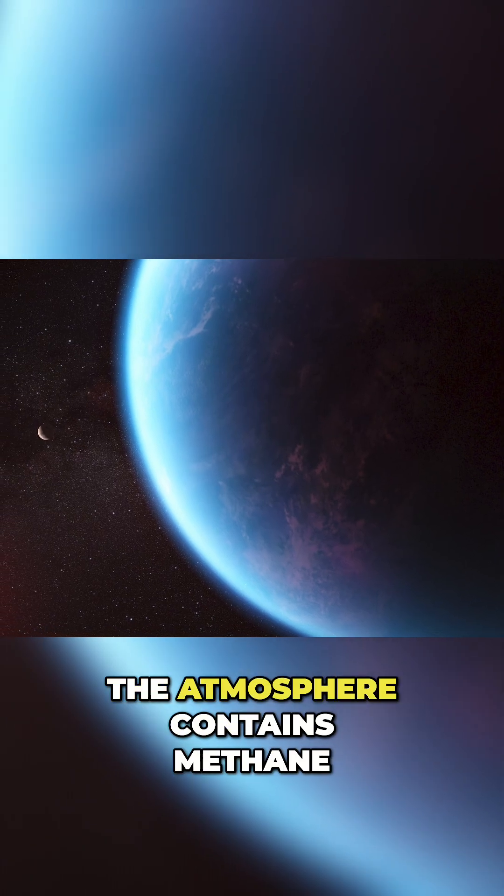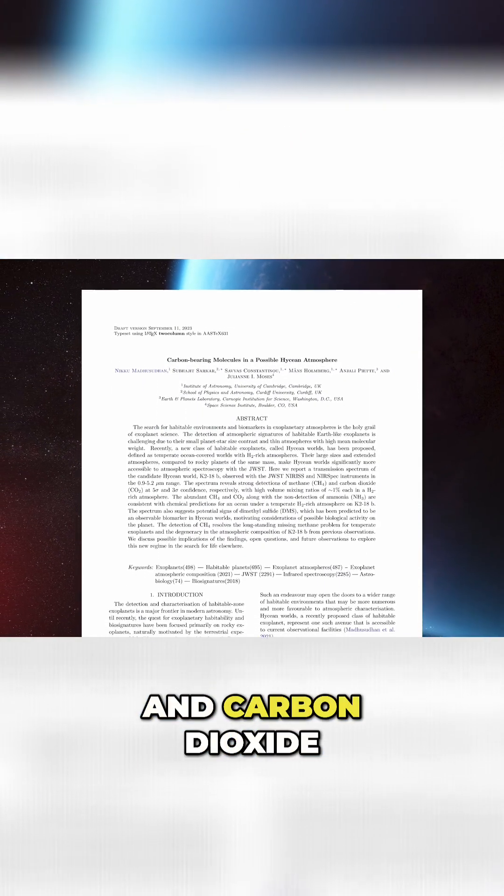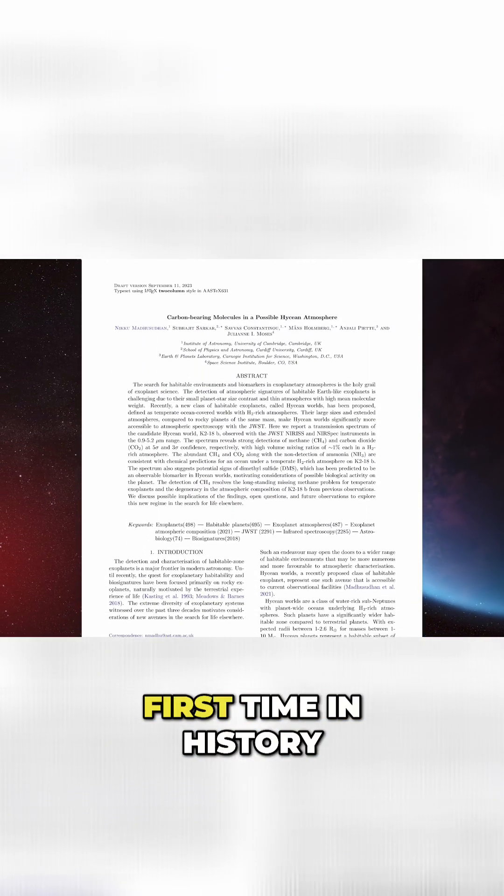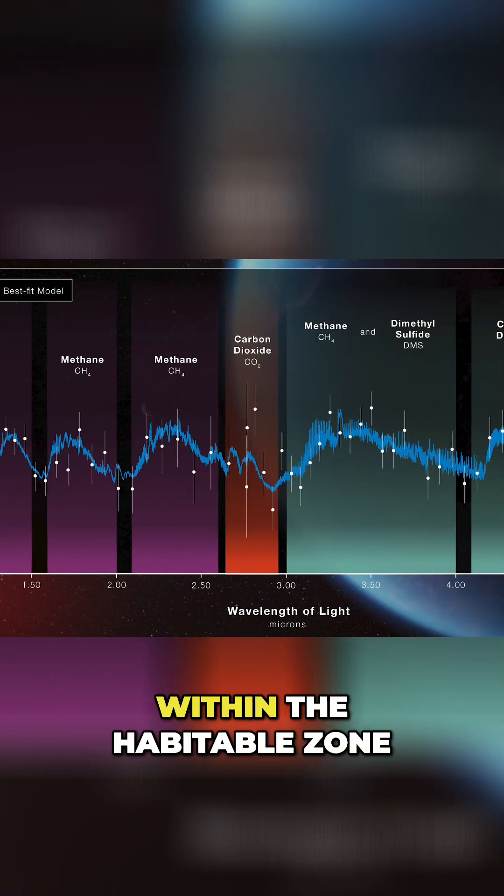This time, it was announced that the atmosphere contains methane and carbon dioxide. This was the first time in history that carbon-based molecules were found on an exoplanet within the habitable zone.